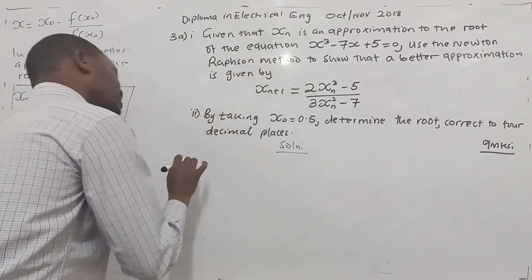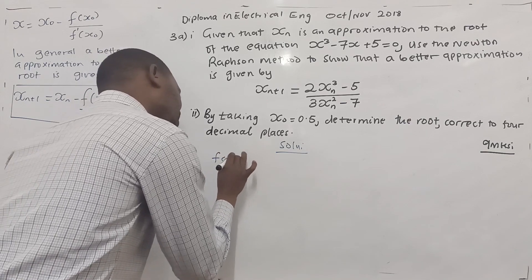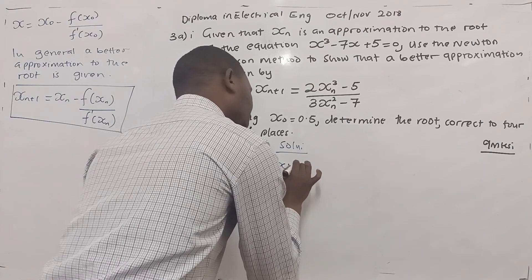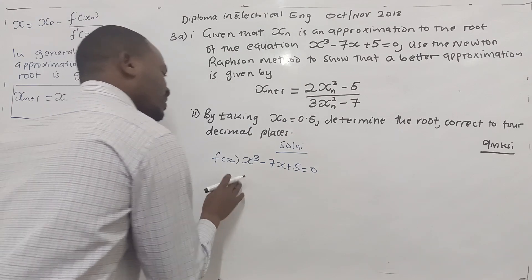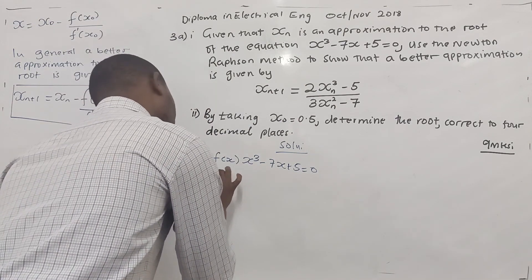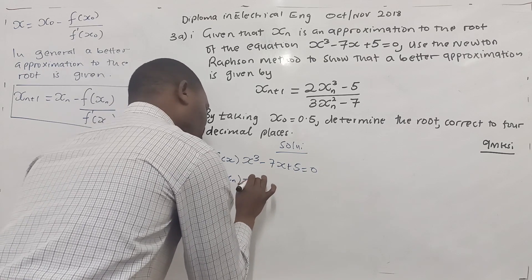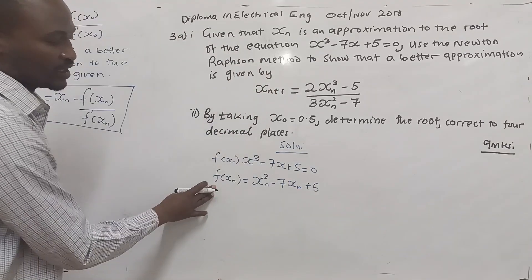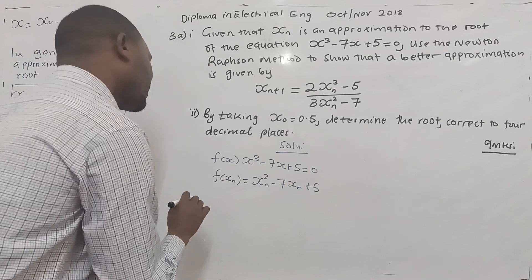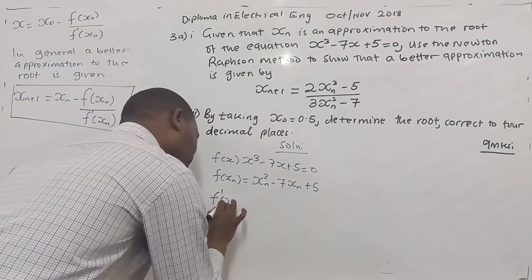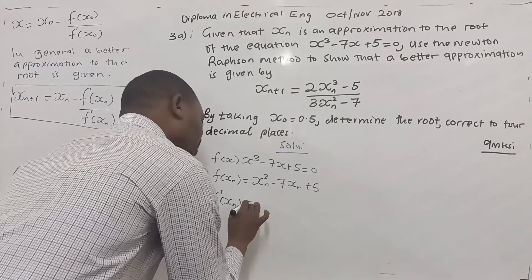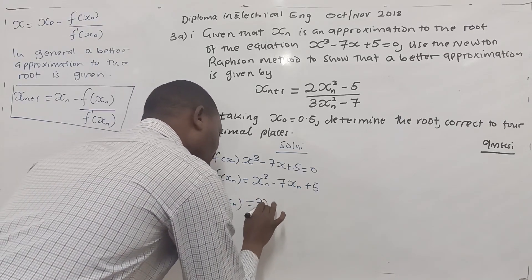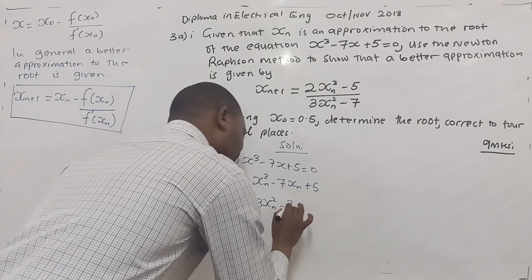Now, we have our function of x. Our function of x is equal to x cubed minus 7x plus 5 equal to 0. From this, we can get f of xn, the function of xn, which is equal to xn cubed minus 7xn plus 5. Let us now differentiate this so that we can get the first order derivative of the function of xn, which will be equal to 3xn squared minus 7.